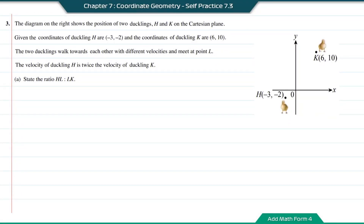Question number 3. The diagram on the right shows the positions of two ducklings, H and K, on the Cartesian plane. The coordinates of duckling H are (negative 3, negative 2) and the coordinates of duckling K are (6, 10). The two ducklings walk toward each other with different velocities and meet at point L. The velocity of duckling H is twice the velocity of duckling K. Part A: state the ratio HL to LK.